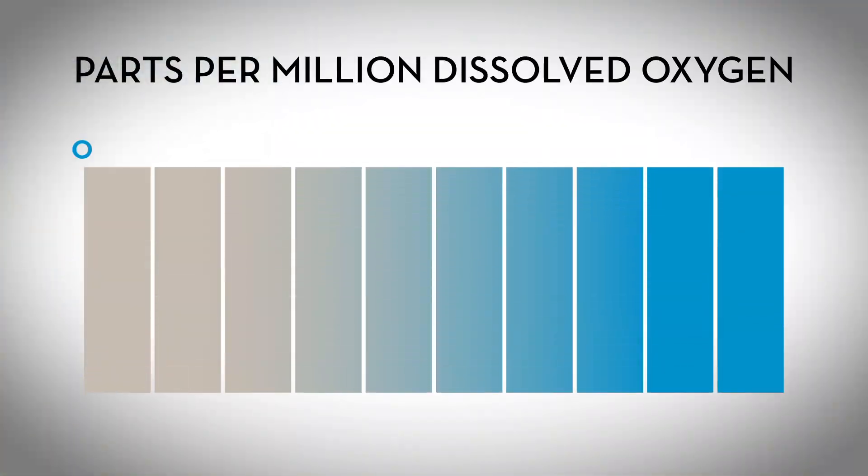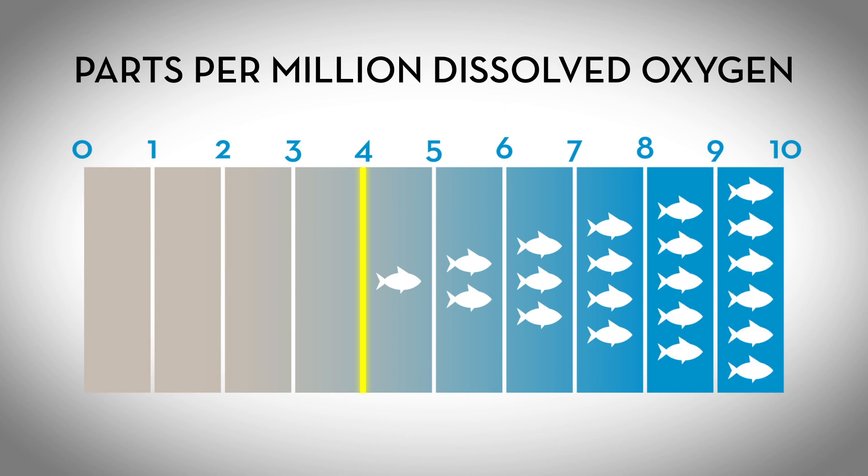When scientists measure dissolved oxygen levels, they use a unit of measurement called parts per million, or ppm. To ensure a healthy biodiversity in the river, you want at least 4 ppm. This means that for every million molecules of water, most aquatic organisms need at least four molecules of oxygen to thrive.